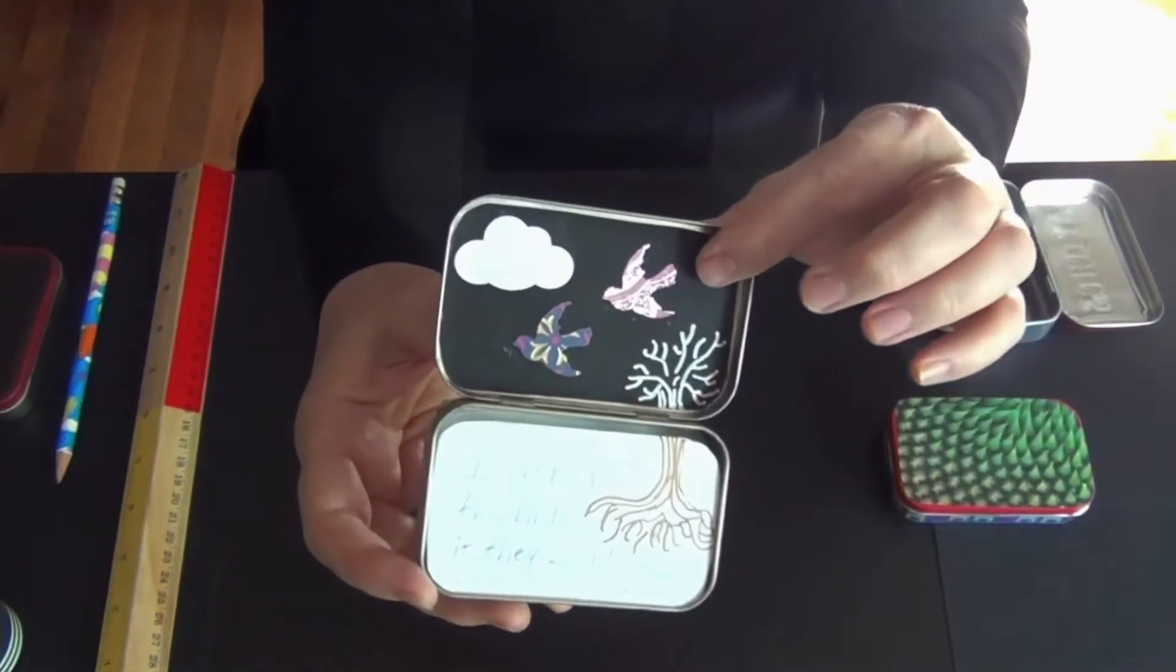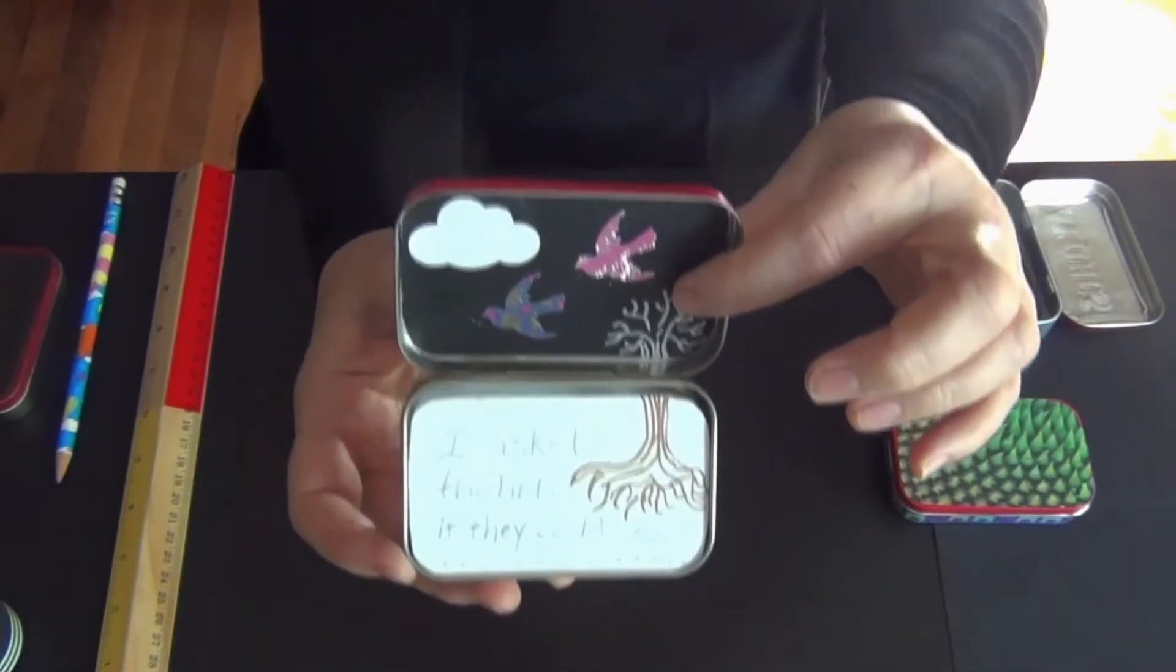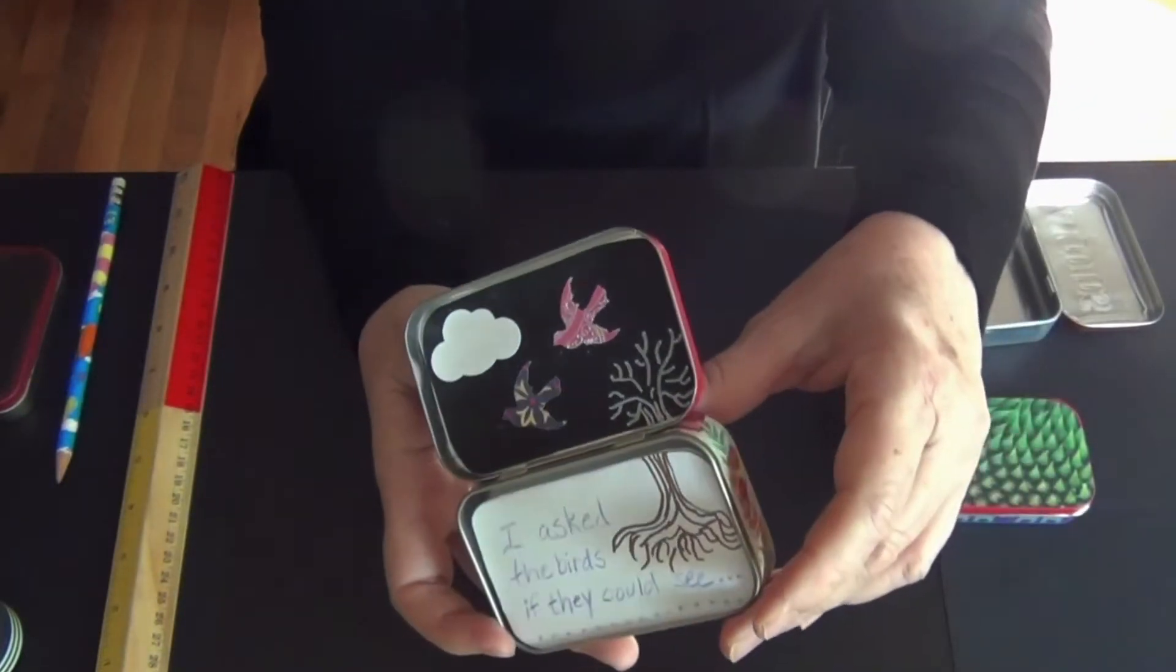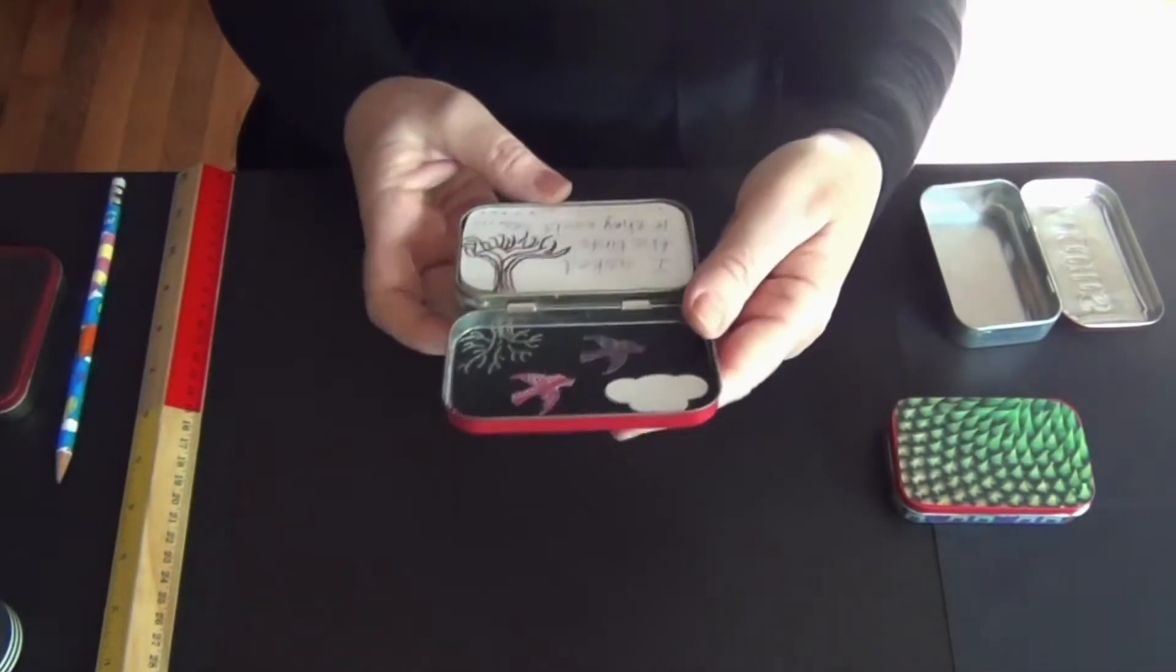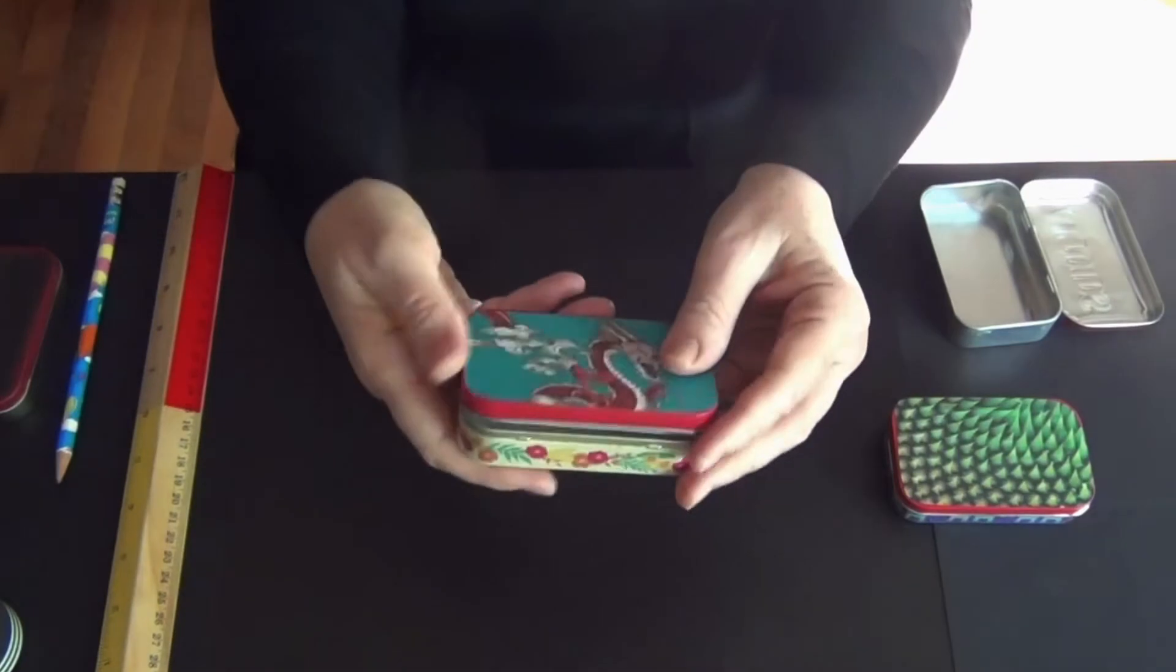And I decorated the lid with some birds, clouds, and there's a tree. You see the tree starts here and it continues on here in the story. And it's kind of hard to read in this light, but this story starts out, I asked the birds if they could see. And then the story continues.